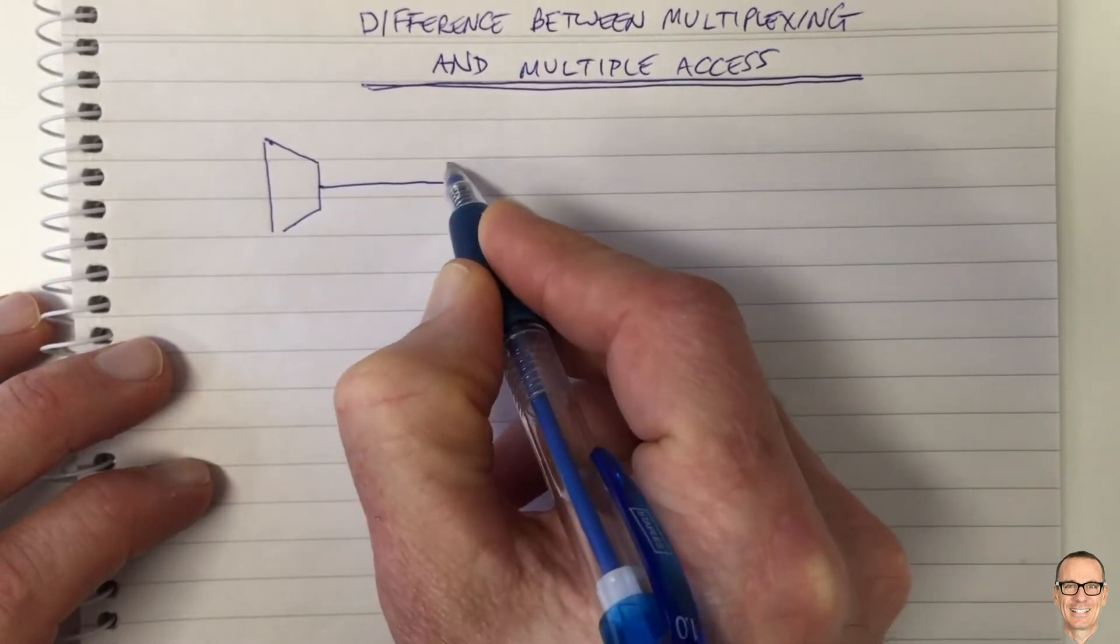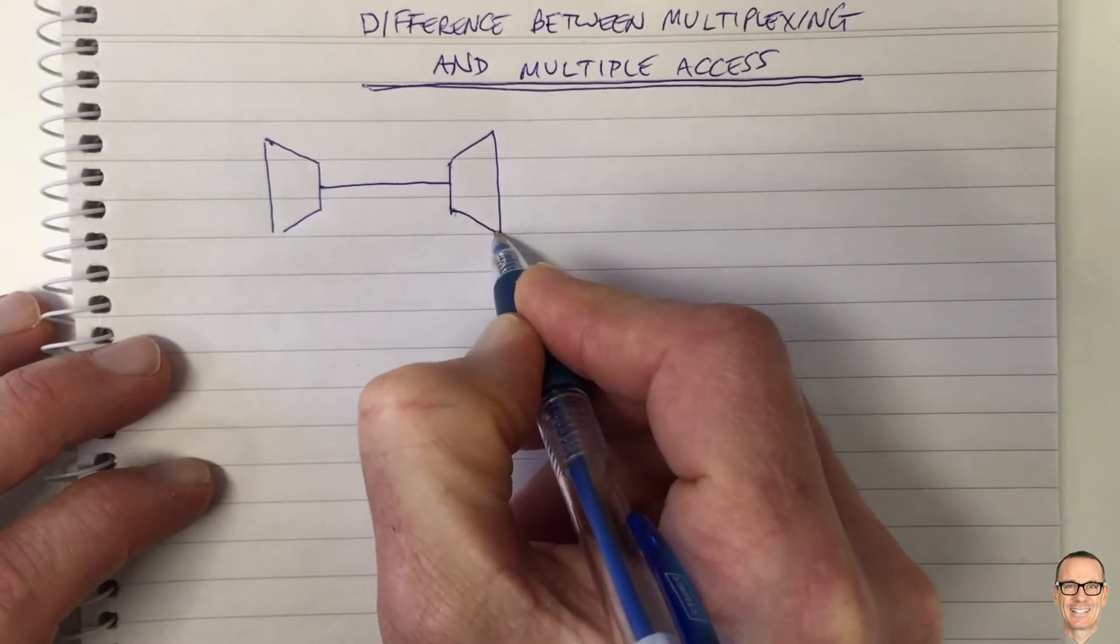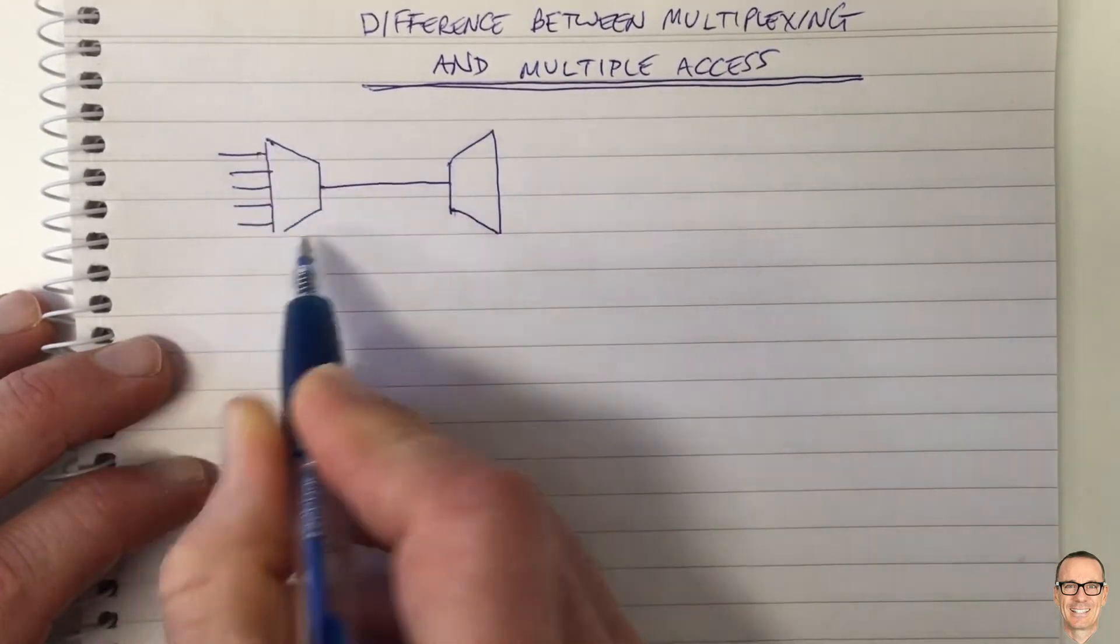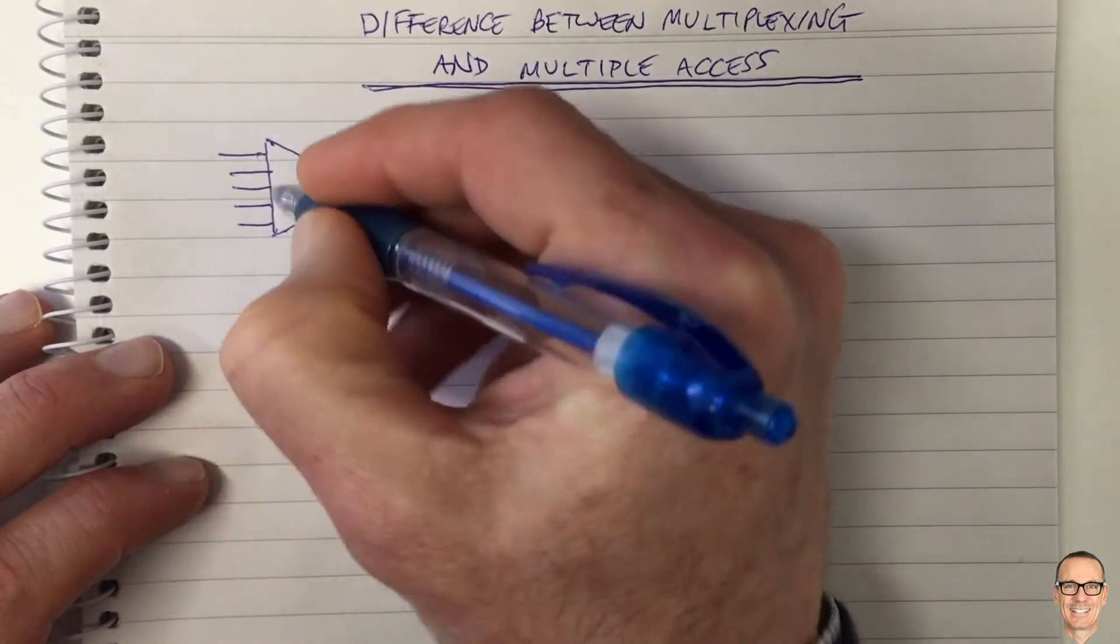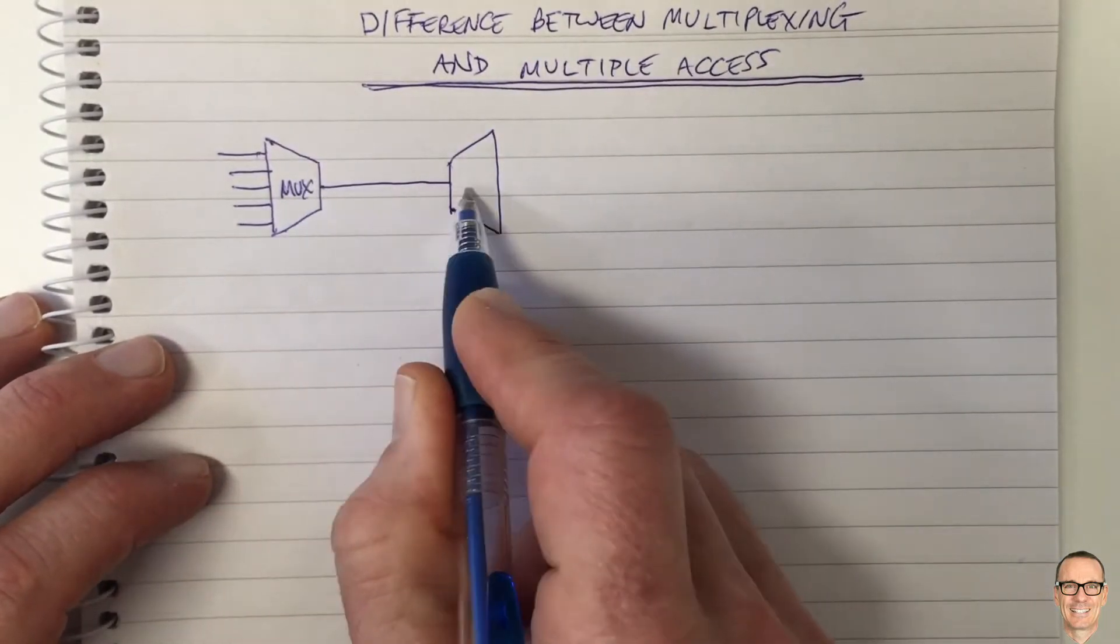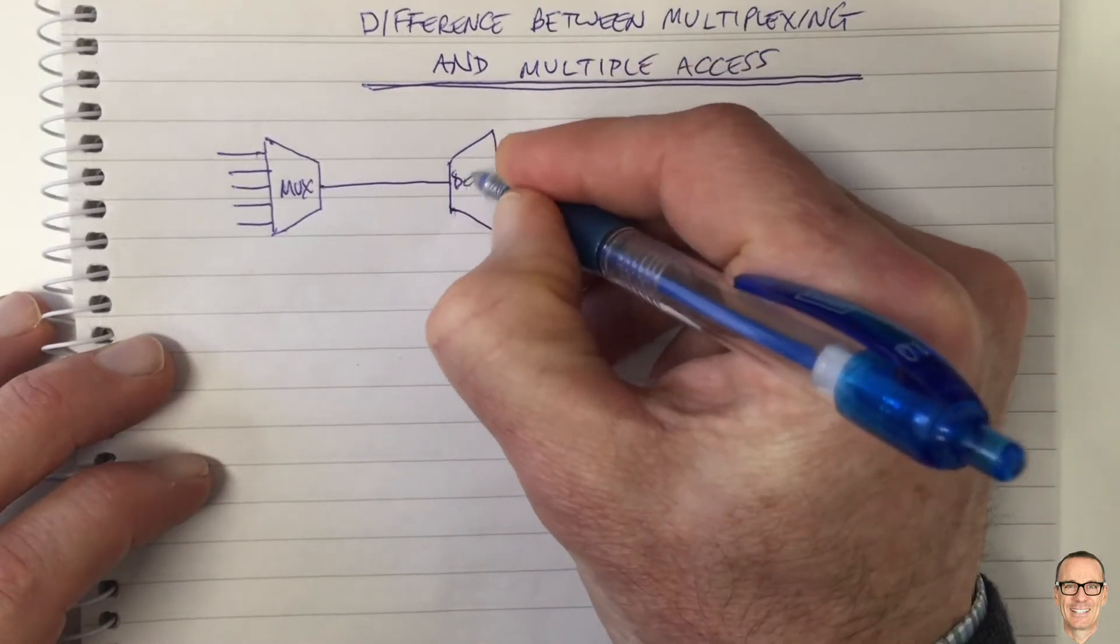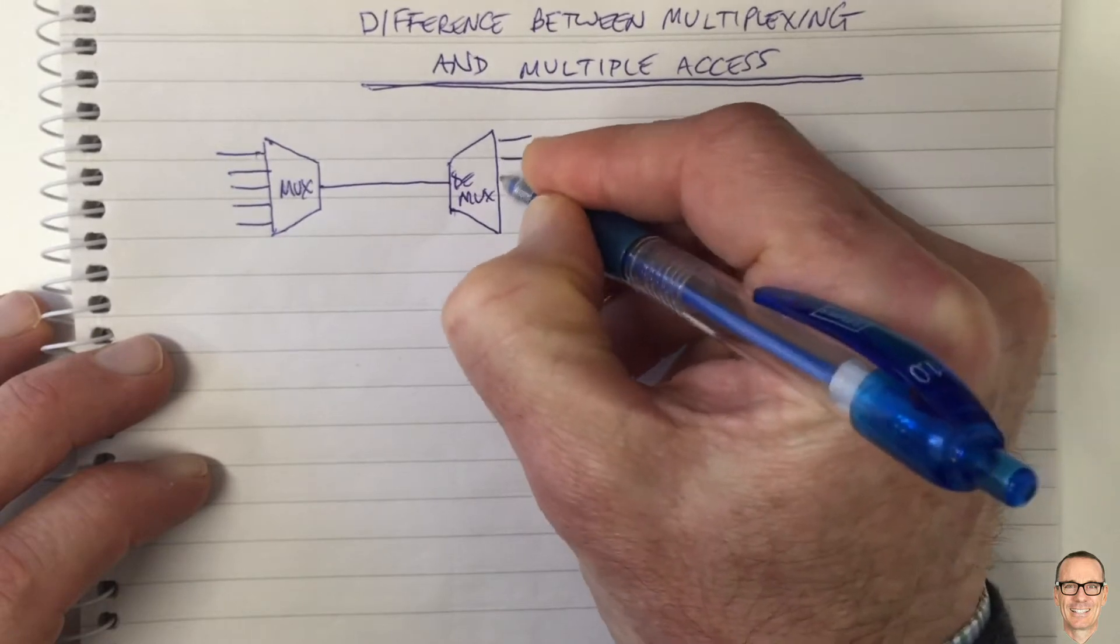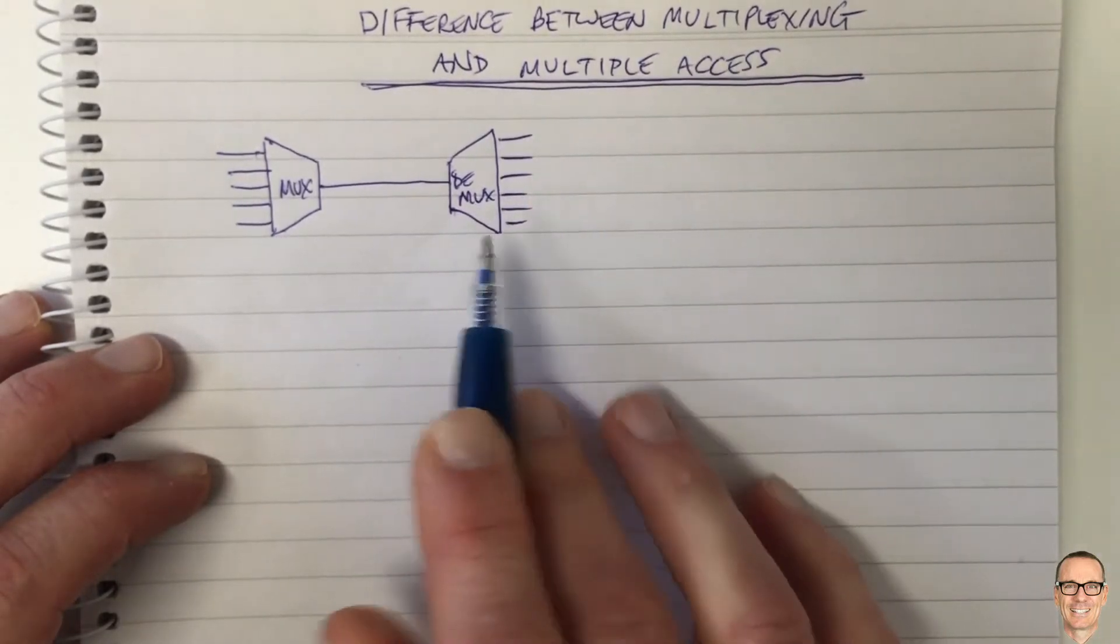So you're going to have control over putting multiple data streams together in a device called a multiplexer, often MUX is used, and it's over a single link.